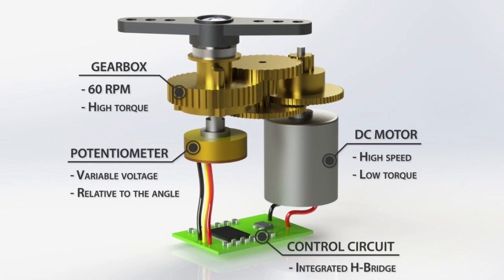The servo motor operates as a closed loop system. In all the drivers, there is a door. With a normal gearbox system, we can track position. For DC motors, we can use potentiometers. For AC servo motors, we can use encoders for position tracking and control. The servo motor consists of a DC or AC motor, a gearbox system, a potentiometer or encoder, and a control circuit.